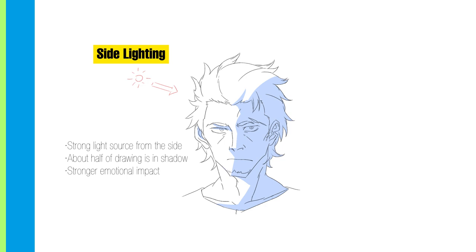Varying it up a bit, another common way to light a character is from the side. This is used when the light source is at an angle, like during dusk or dawn. Use this to give the drawing a stronger emotional feeling than the normal overhead lighting. Notice that much more of the drawing is in shadow here — almost 40% or so.